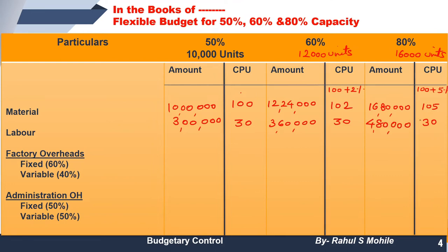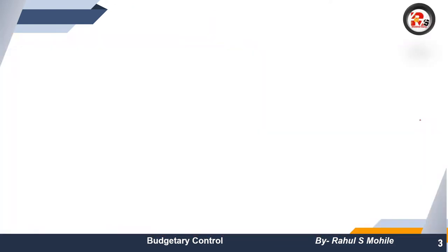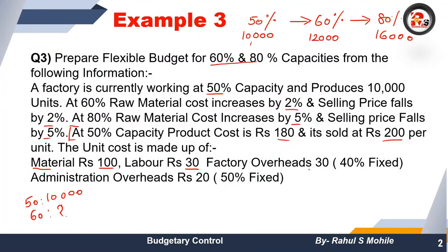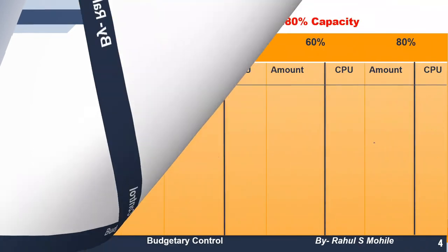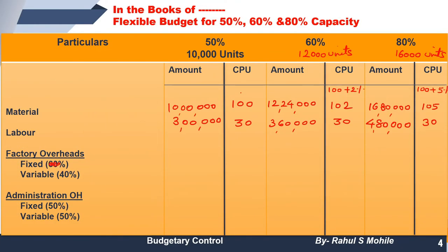Next is factory overhead. Factory overhead given is 30, of which 40% is fixed and the remaining 60% is variable. So fixed portion: 40% of 30 = 12 per unit, and variable portion: 60% of 30 = 18 per unit. Fixed: 12 multiplied by 10,000 = 1,20,000. Variable: 18 multiplied by 10,000 = 1,80,000.